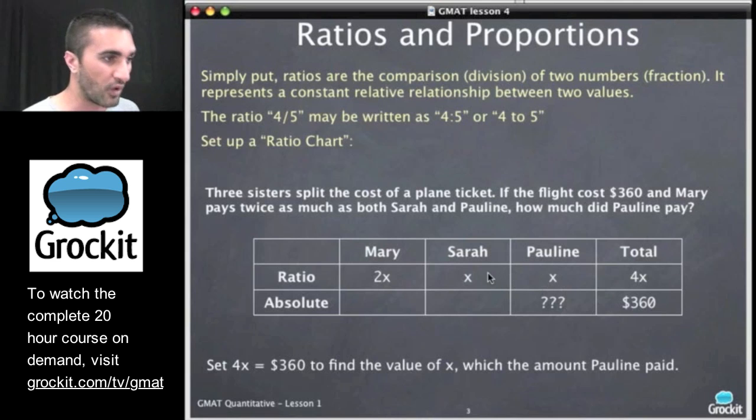So why is this 4X? Well, we say this is the total amount, 2X plus X plus X equals 4X. So we now have a simple equation for ourselves, 4X equals 360, and to find the value of X, we just divide by 4. And everyone tell me in the chat box what 360 divided by 4 is.